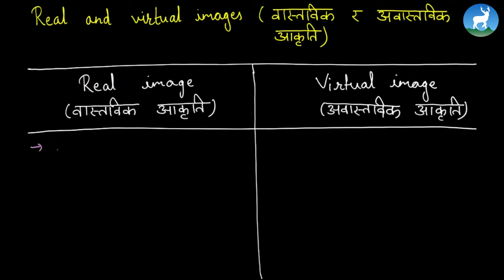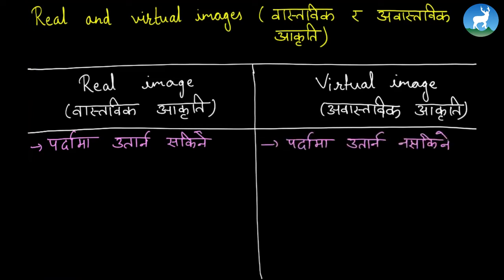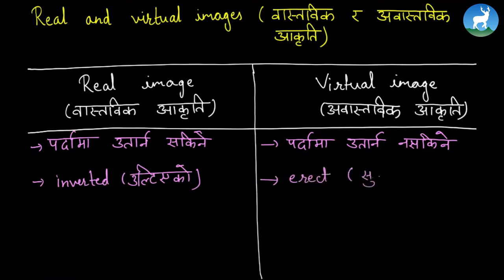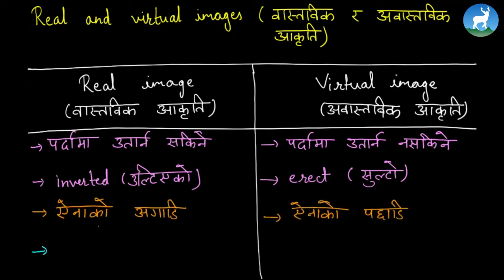A real image (Vastavik Akriti) is one that can be projected onto a screen. An image that cannot be projected on a screen is called a virtual image. A real image is inverted (ulto), while an erect (sulto) image is called an erect image.